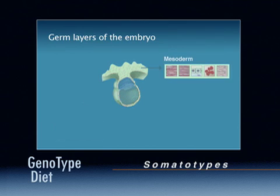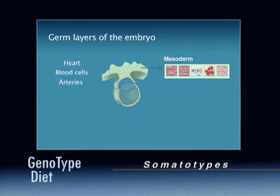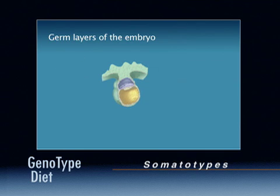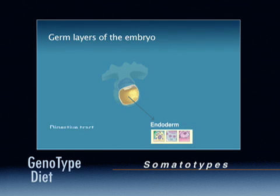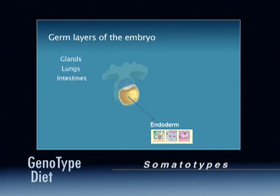Mesoderm tissue forms the muscles, the skeleton, the kidneys, heart, blood cells, and arteries. Endoderm tissue forms the digestive organs, most of the glands of the body, the lungs, and the intestines.